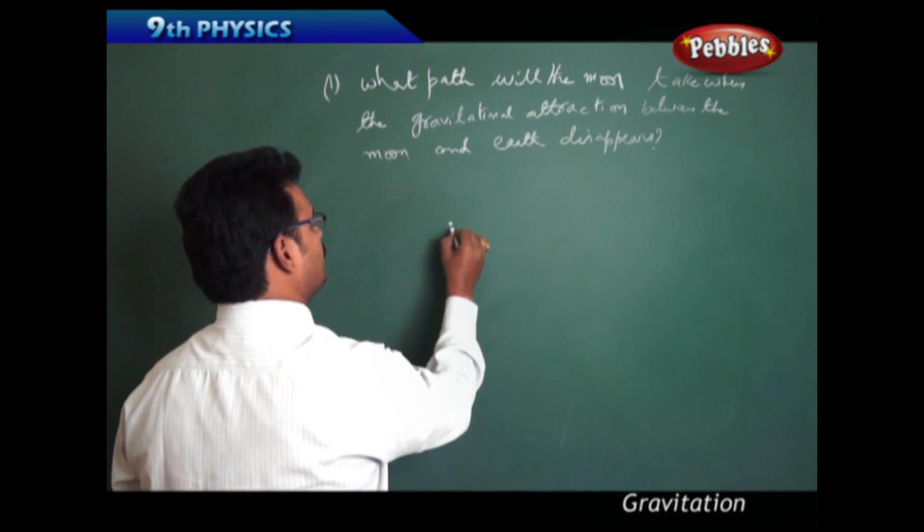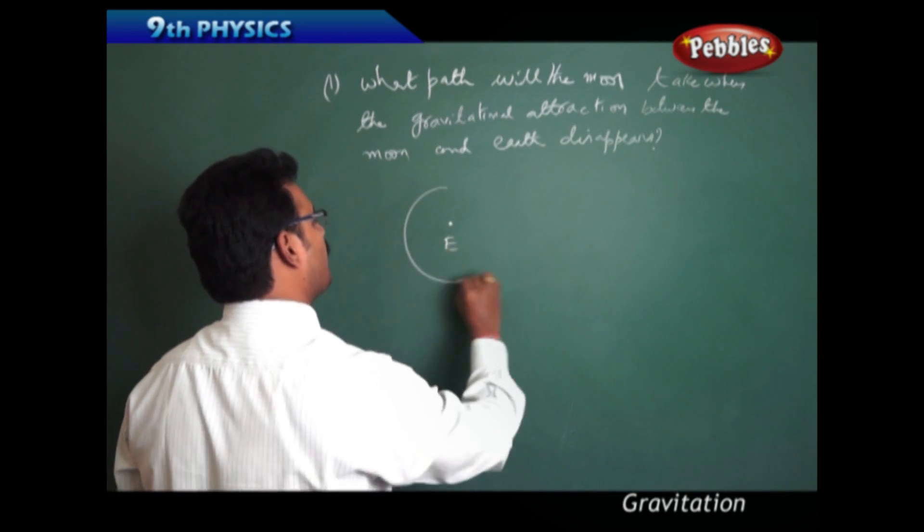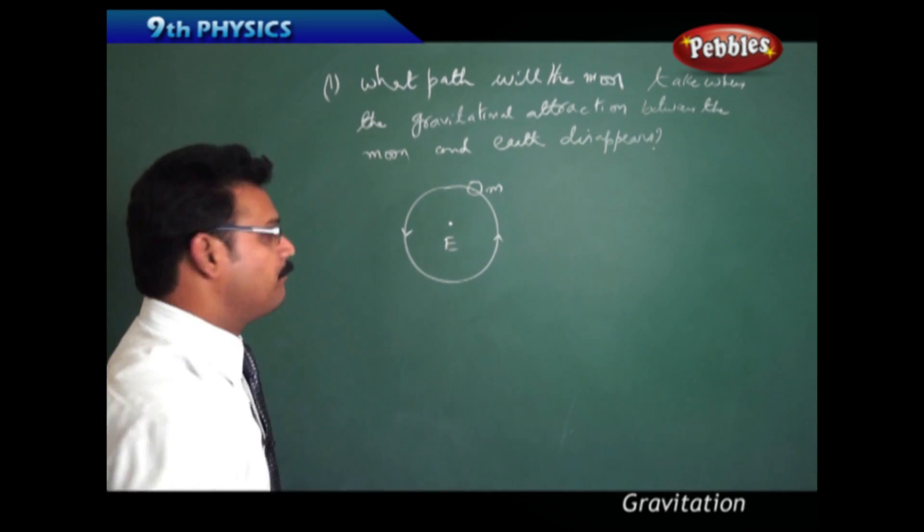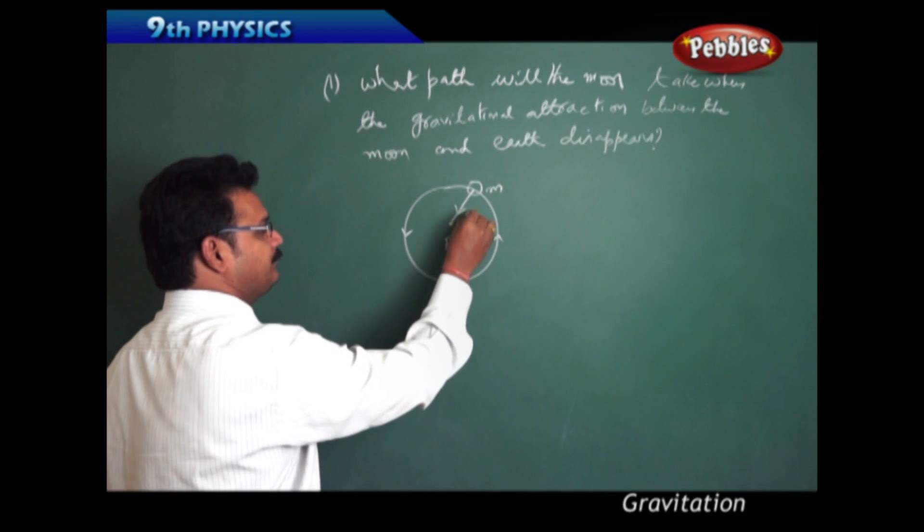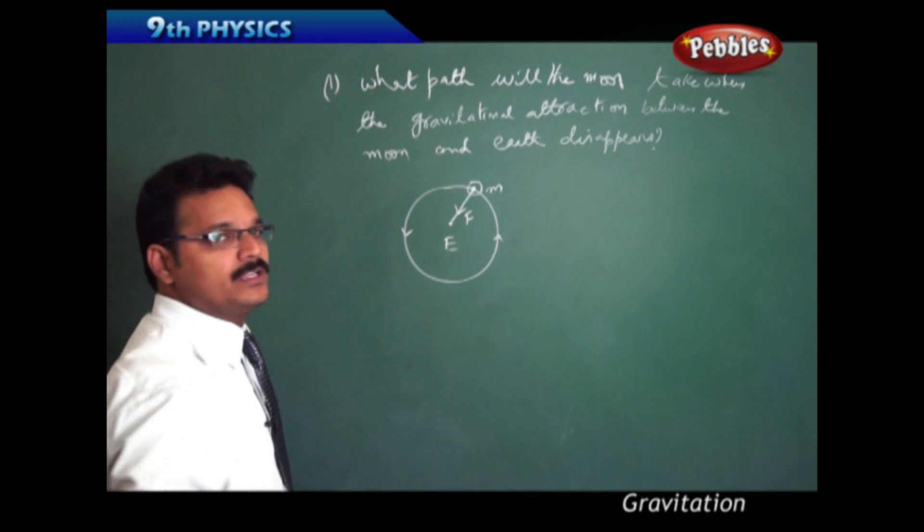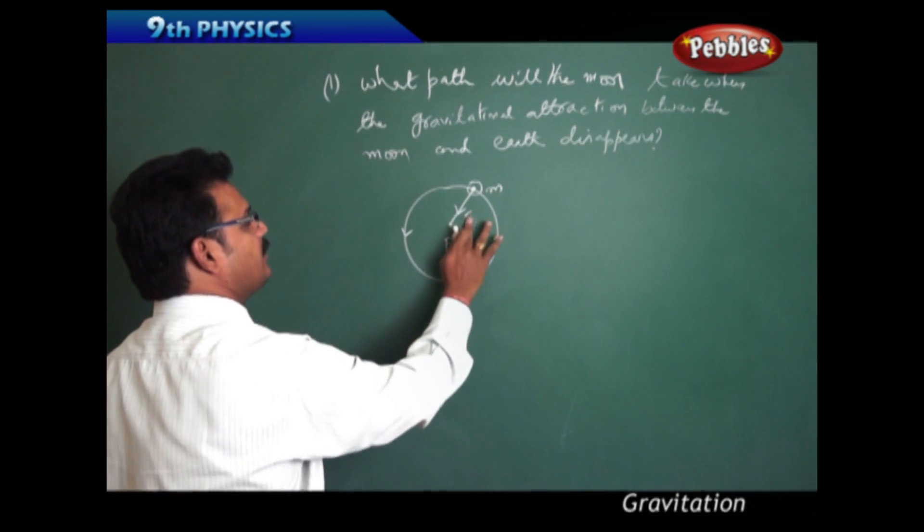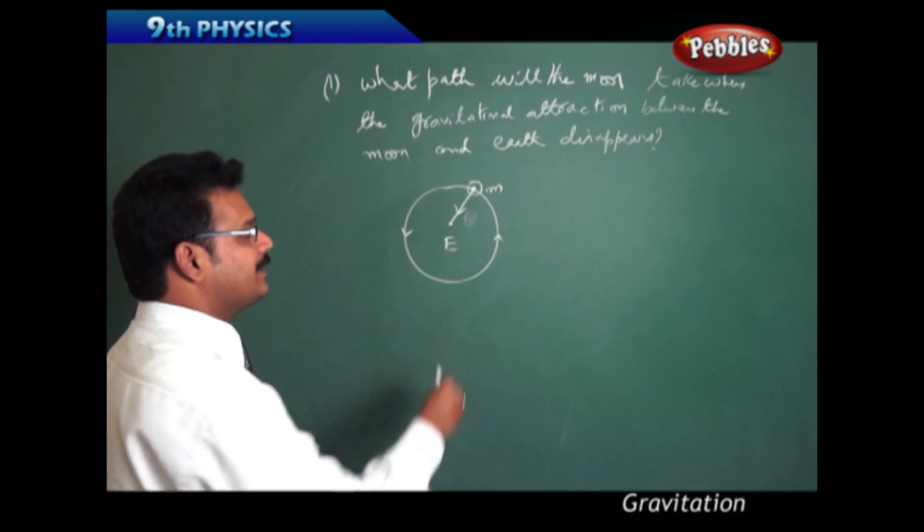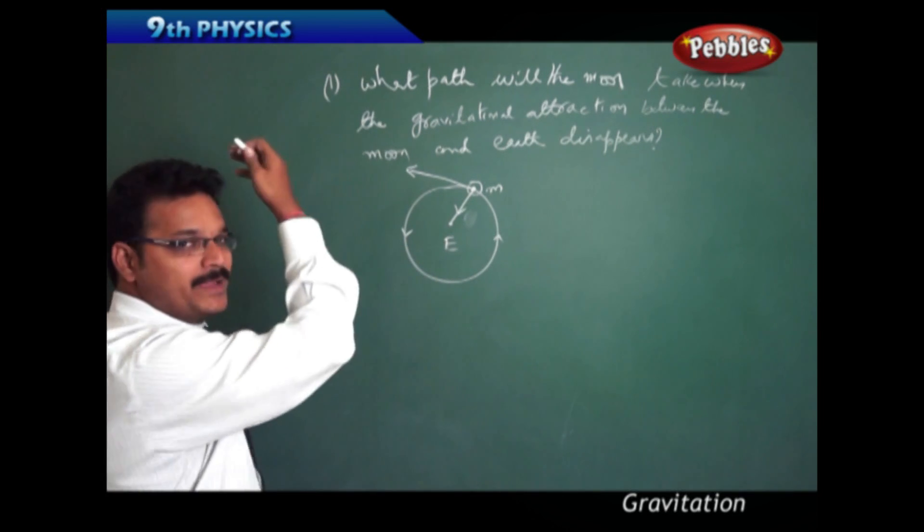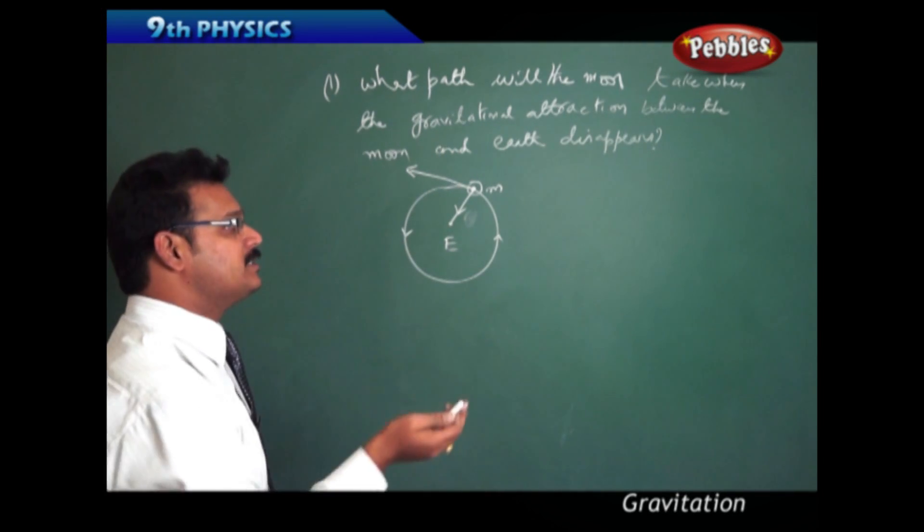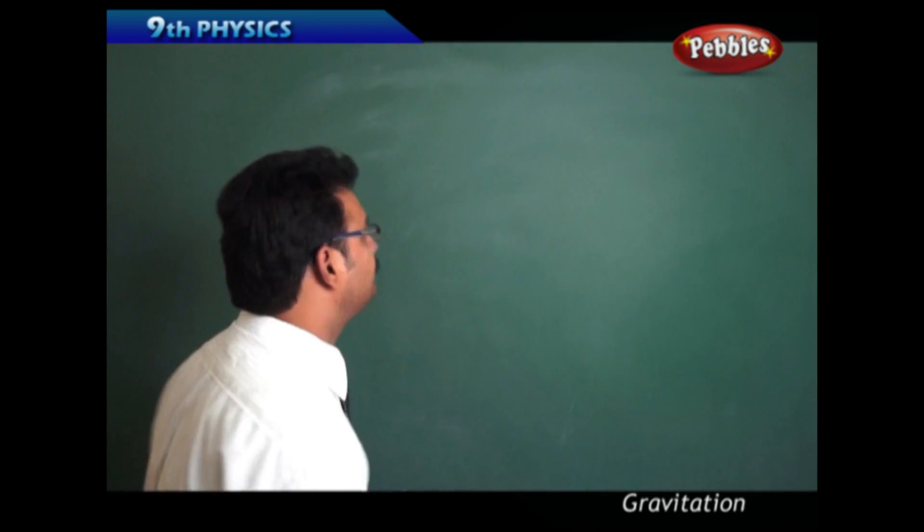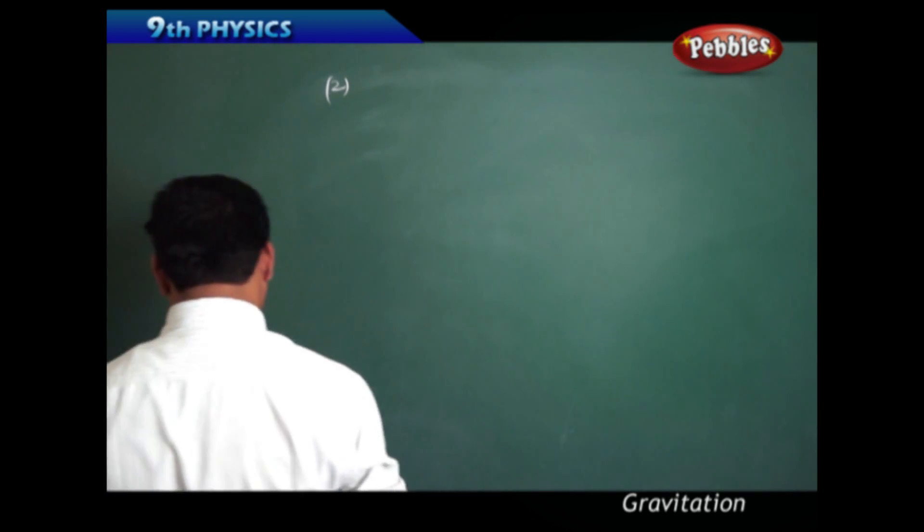This is the earth, and around the earth the moon is rotating in a circular path because of the gravitational force between the earth and the moon. Suppose at this point the gravitational force disappears. Then the moon travels in the tangential path and goes into space and never comes back. That means the moon escapes into space.